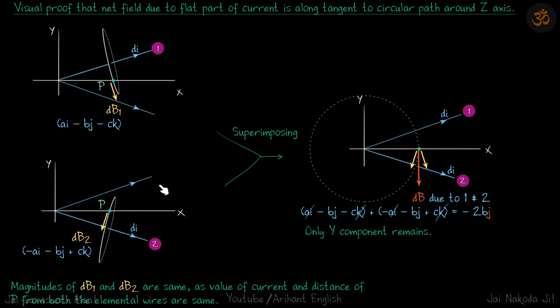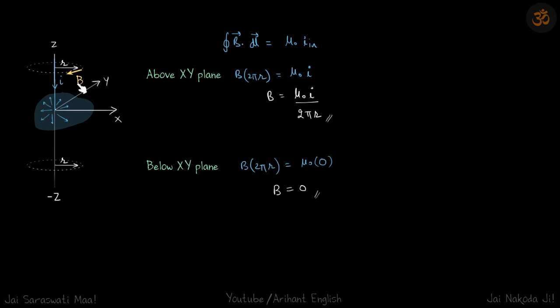If you superimpose both of them, we need to find the field due to wire one and wire two. This will be dB₁ plus dB₂, which comes out to be minus 2b ĵ. Here mathematically you can see that the net field will be in minus y direction. Only y component remains. Once we know that, we can comfortably use Ampere's law and find the value of field. Above it is μ₀I by 2πr, same as long wire, and below the XY plane it is 0.